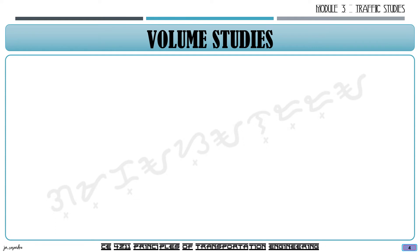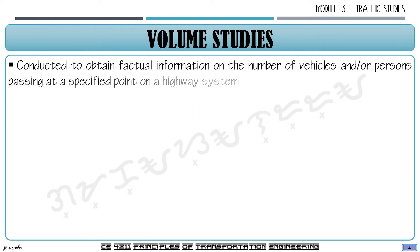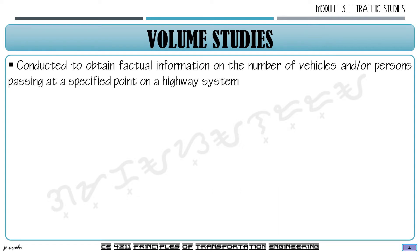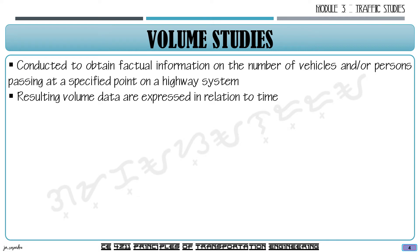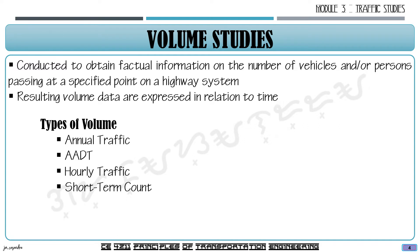For the first type — volume studies — this is conducted to obtain factual information on the number of vehicles and/or persons passing at a specified point on a highway system. The volume studies identify the volume that a section of highway or road can handle. The resulting volume data are expressed in relation to time, and we have different types: annual traffic, annual average daily traffic (AADT), hourly traffic, and short-term count.